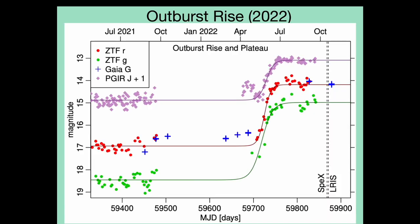If we zoom in on the rise portion of the outburst, we can see that the light curves — ZTF G, R, and Gattini J — are well-fit by sigmoid functions. From these fits, we calculate a rise time of roughly 2 months, followed by a plateau at near-maximum brightness.